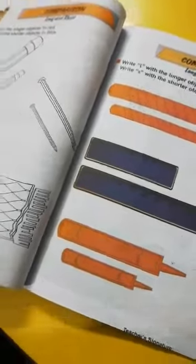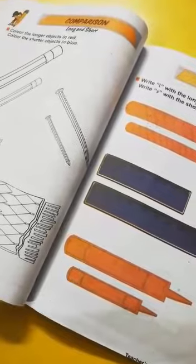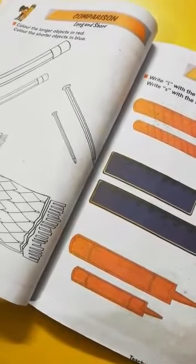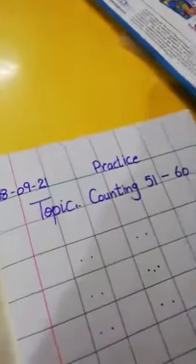इन दोनों pages के आपने practice जो है वो घर में करनी है, rough registers पे, draw करके आपने pictures को उसके अंदर color करने है and write करना है. Now, open your rough registers. Do practice.